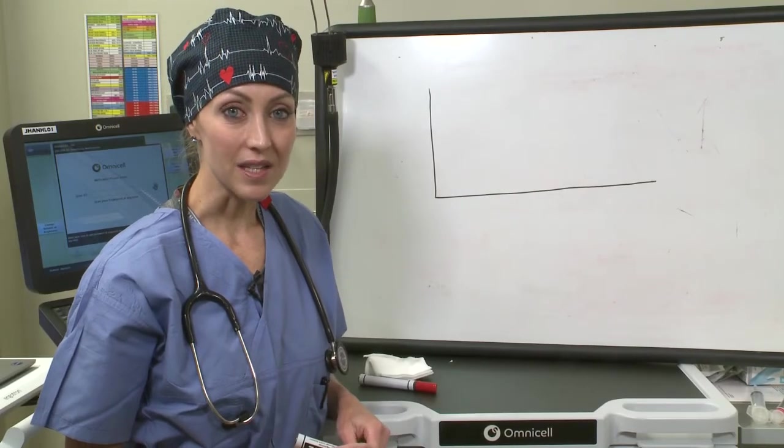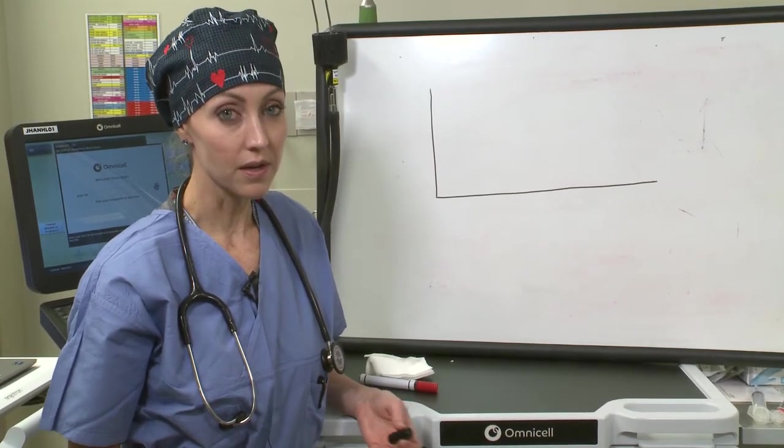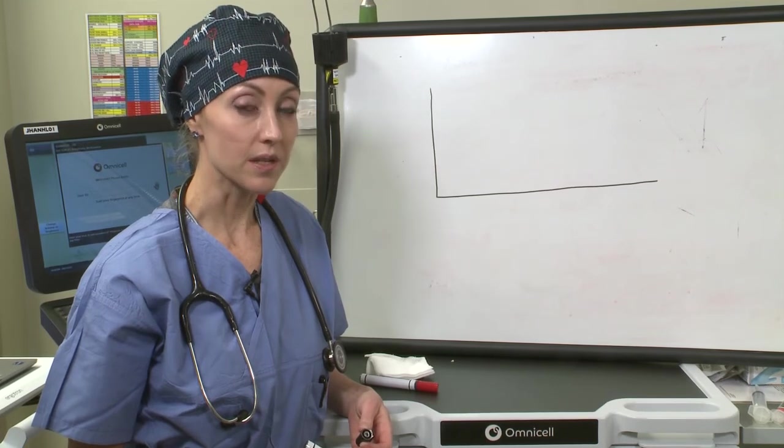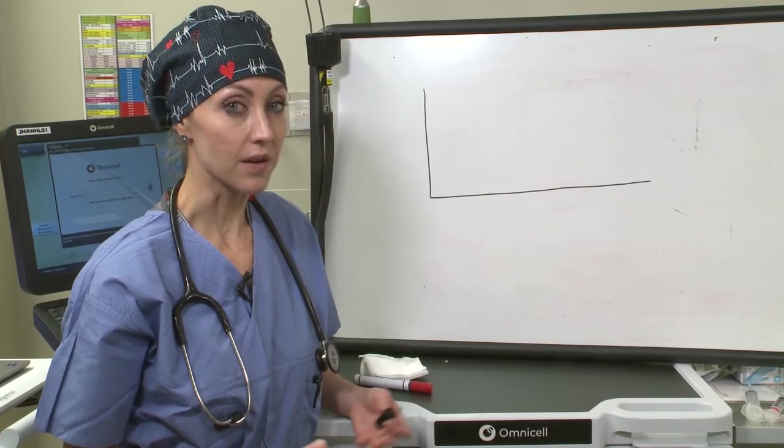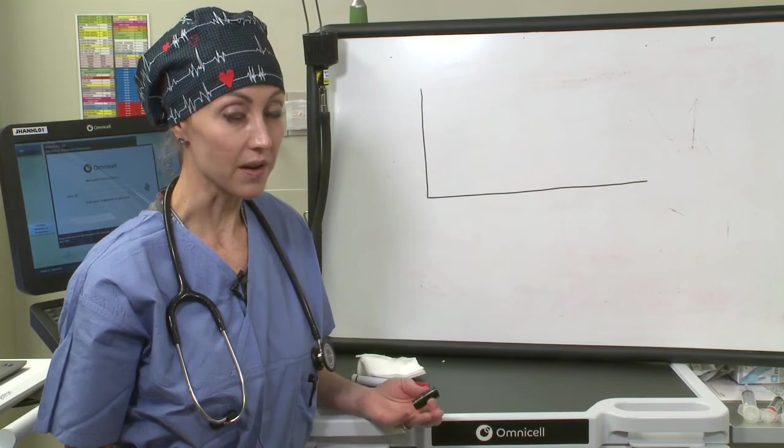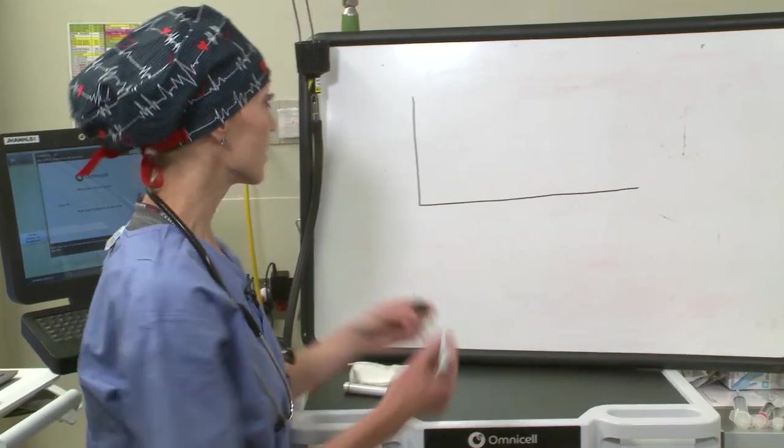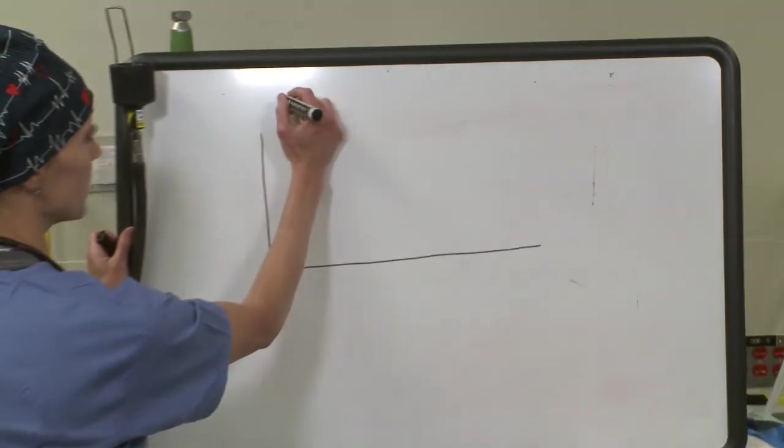All right, this will be the last part of this video. I'm going to go over a really simple method to learn how to float a swan. So in our last video, we talked about sterile technique and how to basically prepare yourself to float it, but you need to be able to interpret the values. So there's a really simple way to understand the values when you're floating your swan. And it is called the rule of sixes.